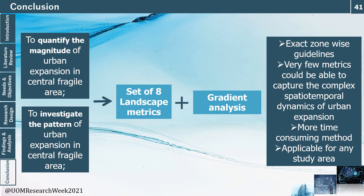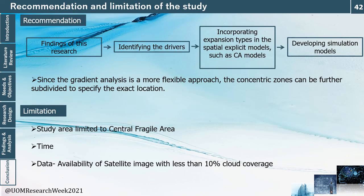In conclusion, both objectives of quantifying the magnitude and pattern were achieved through eight landscape metrics combined with gradient analysis. This method is highly recommended for deriving zone-specific guidelines rather than generalized ones. Very few metrics can capture complex spatiotemporal dynamics, and while this is the most time-consuming method compared to others, it is applicable to any study area. As a recommendation, the workflow should start from ground-reality elements like magnitude and patterns, then identify the factors and drivers, and incorporate them into cellular automata models for future simulation to support planning guidelines. The gradient analysis is also a flexible approach where concentric zones can be further subdivided for more specific locations. Limitations include the constraint to the Central Fragile Area, time limitations stopping the analysis at the ground reality stage, and limited satellite image availability in developing countries.